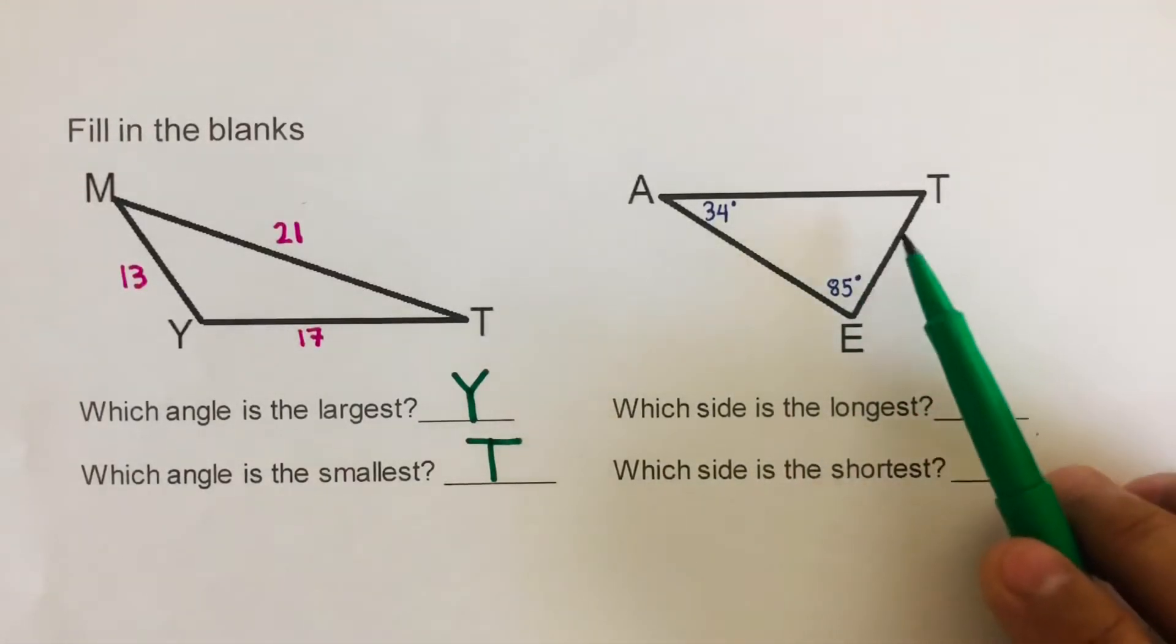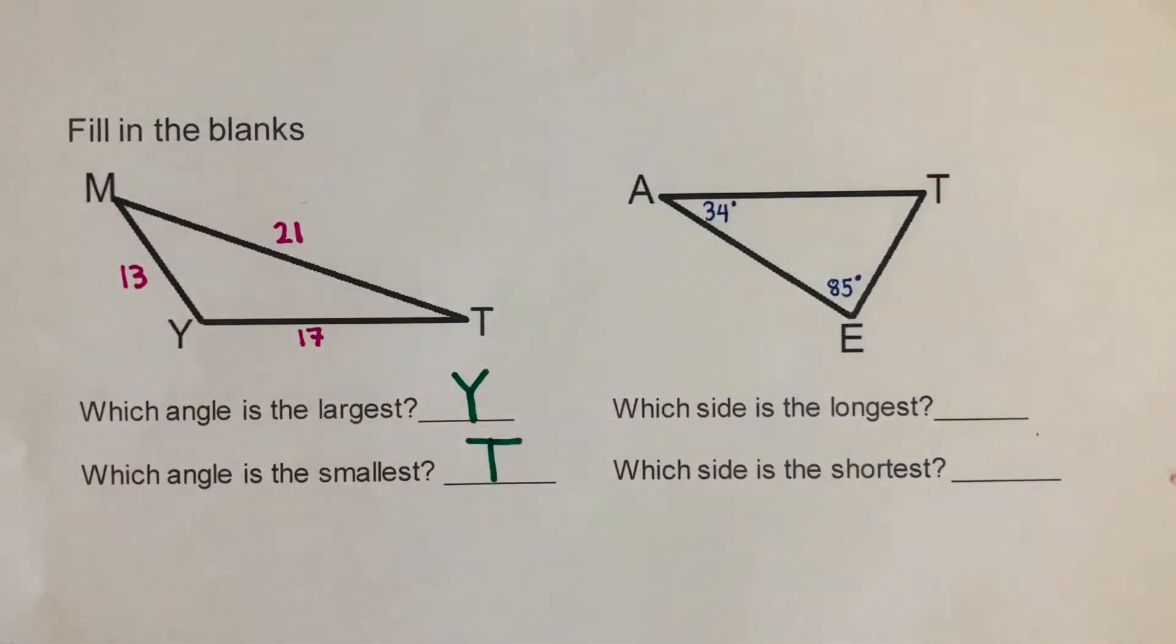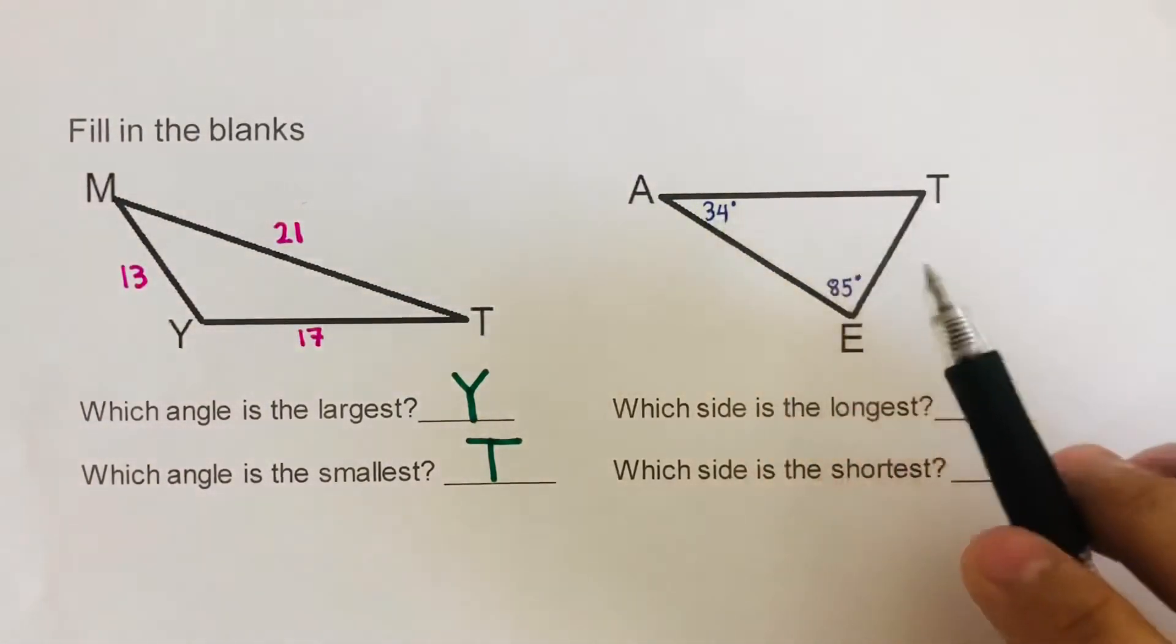Now others may have thought, oh, we are missing this angle right here. Remember, we are supposed to use the angle sum theorem—that the sum of all the angles inside the triangle is 180.